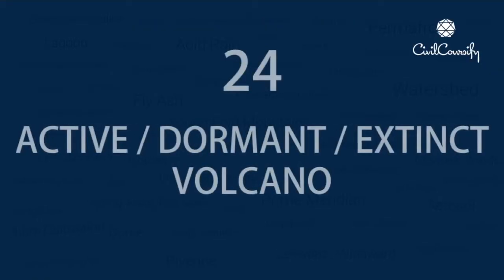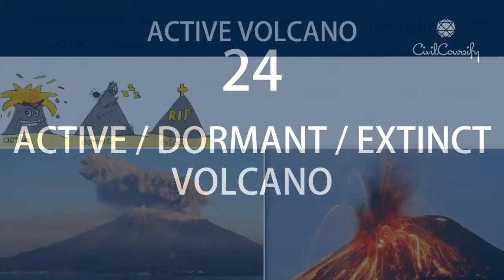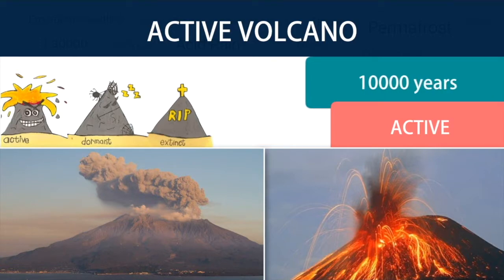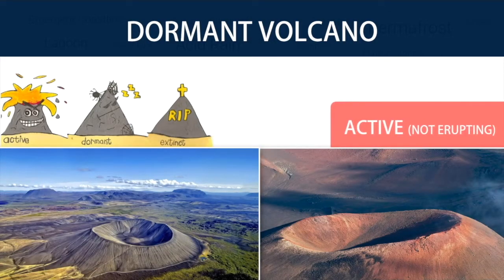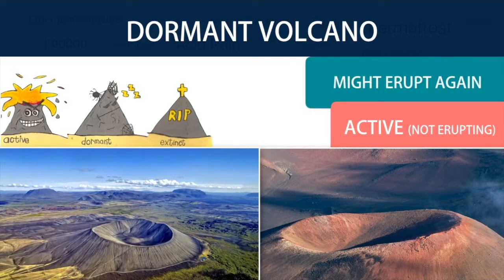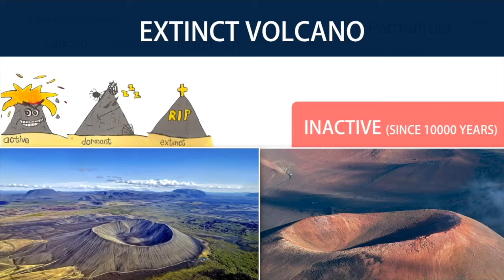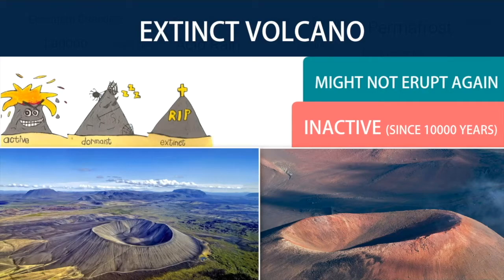Number 24: Active, Dormant, and Extinct Volcanoes. An active volcano is a volcano that has had at least one eruption during the past 10,000 years. An active volcano might be erupting or dormant. Whereas a dormant volcano is an active volcano that is not erupting but is supposed to erupt again in the near future. An extinct volcano is one that did not have any eruption in the last 10,000 years and is not expected to erupt again in a comparable time scale of the future.